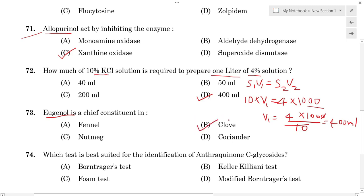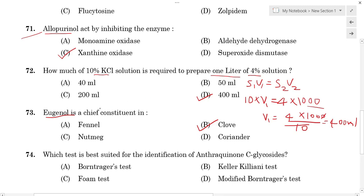Eugenol is present in several plants including pepper, cinnamon, tulasi, turmeric, thyme, and nutmeg. However, eugenol is the chief constituent of clove.